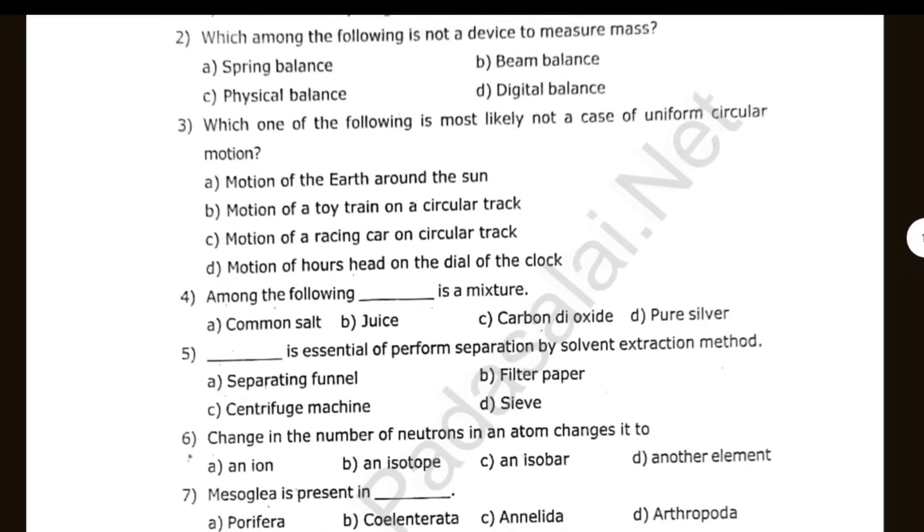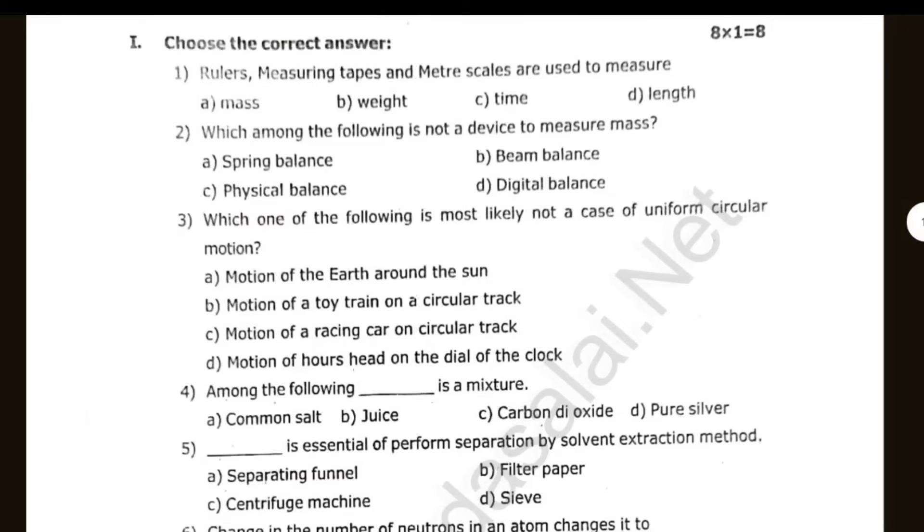Let's check one mark. Ruler's measuring tape and meter scales are used to measure dash. Which among the following is not a device to measure mass? Which one of the following is most likely not a case of uniform circular motion?